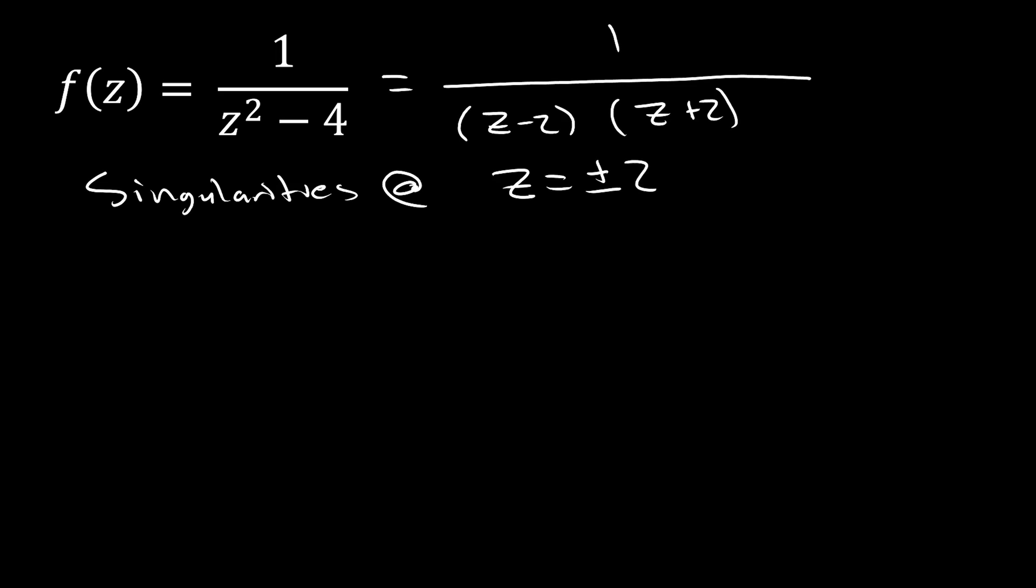So, therefore, we're going to have two different residues for each one of these different values. Let's use our formula here to find one for z equals two.